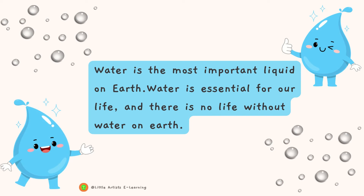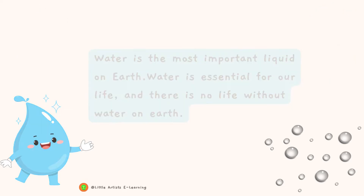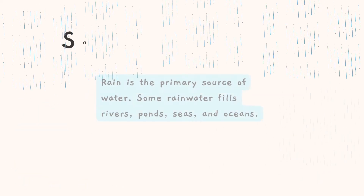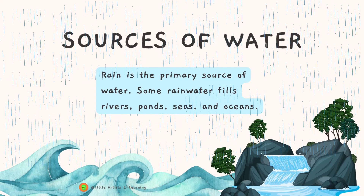Water is the most important liquid on earth. Water is essential for our life and there is no life without water on earth. Sources of water: rain is the primary source of water. Some rainwater fills rivers, ponds, seas, and oceans.